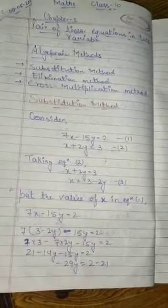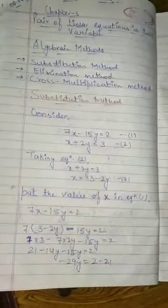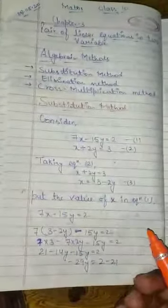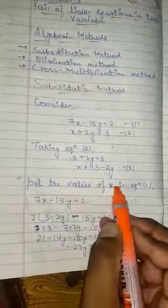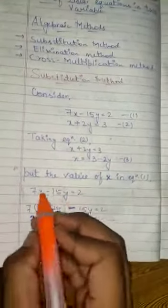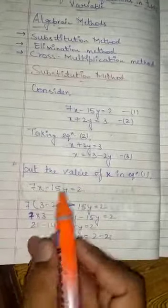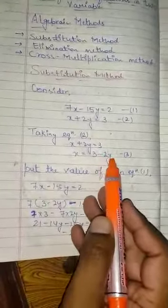Now equation 3 we will put in the first equation, which we will find out. First equation is 7x minus 15y equals 2. Now put the value of x in equation 1. So 7x minus 15y equals 2. The value of x is 3 minus 2y.